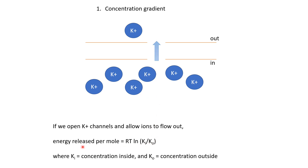The exact relationship is given by this formula: energy released per mole of potassium ions moving out equals RT ln(Ki/Ko), where R is the gas constant, T is the absolute temperature in Kelvins, ln is the natural logarithm, Ki is the concentration of potassium ions inside, and Ko is the concentration outside. If the concentration inside is higher, this term is positive — energy is released when potassium ions move out. If concentration inside were less, the energy released would be negative, meaning energy would be consumed.